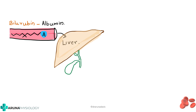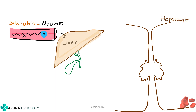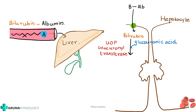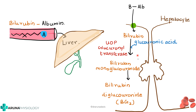Inside the liver the rest of the steps take place. In a hepatocyte, which is a liver cell, the bilirubin-albumin complex will be pumped in and conjugated — meaning it combines with glucuronic acid. This occurs with the help of the enzyme UDP glucuronyl transferase, causing conversion of bilirubin to bilirubin monoglucuronide, which then conjugates with one more molecule to form bilirubin diglucuronide. This step is called conjugation and occurs in the liver.